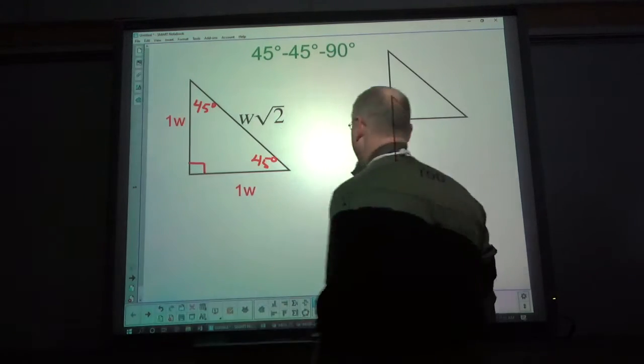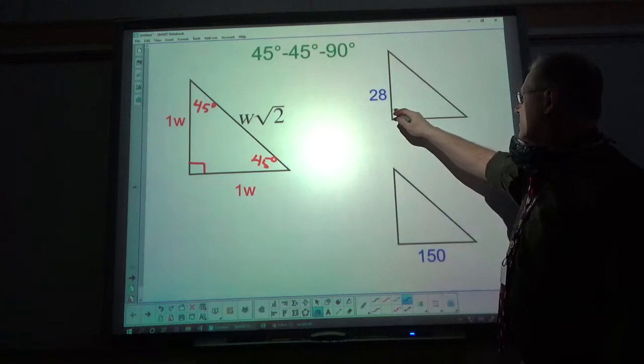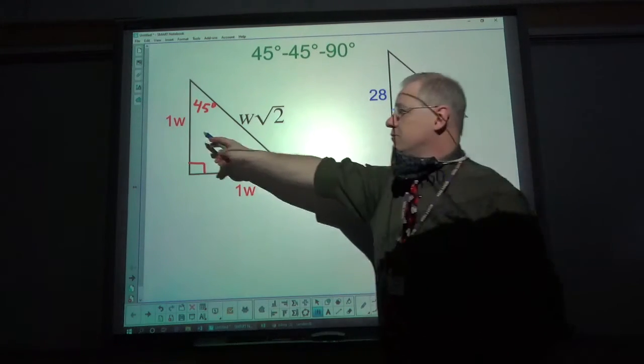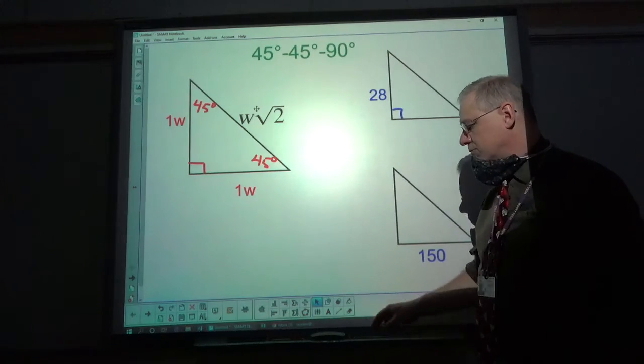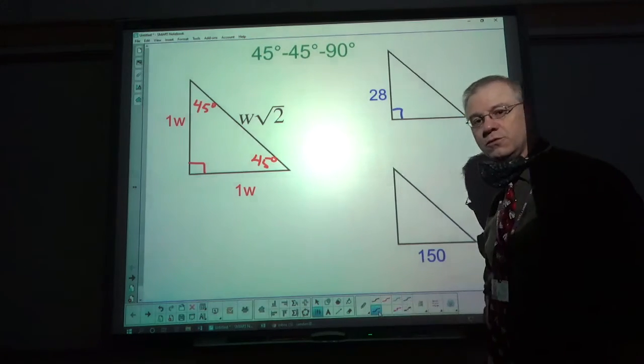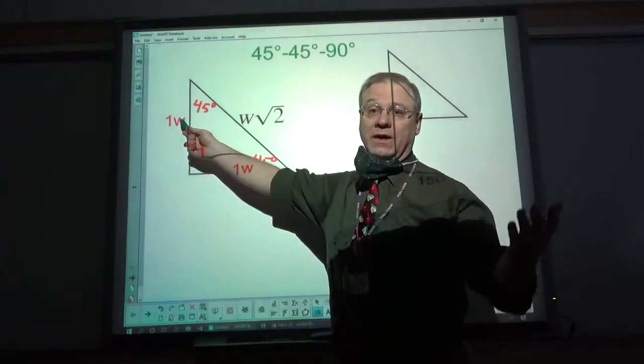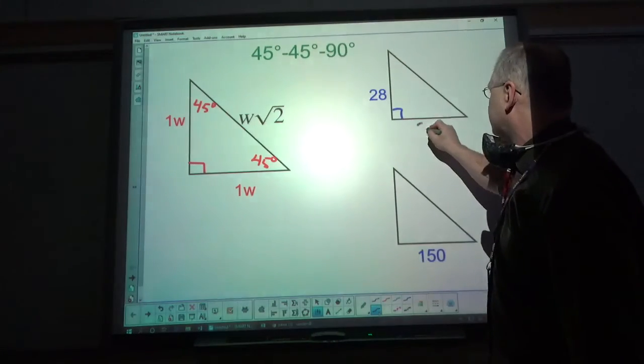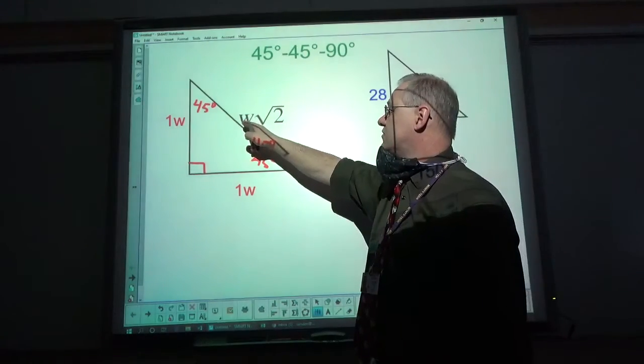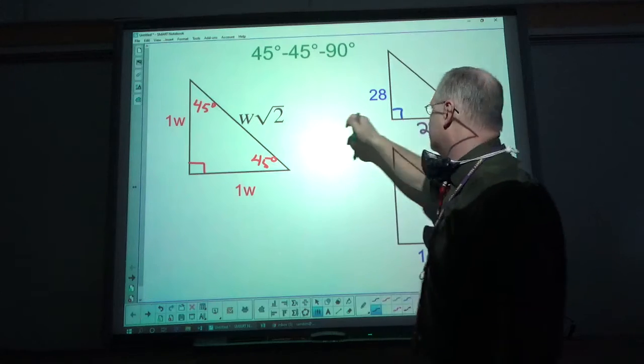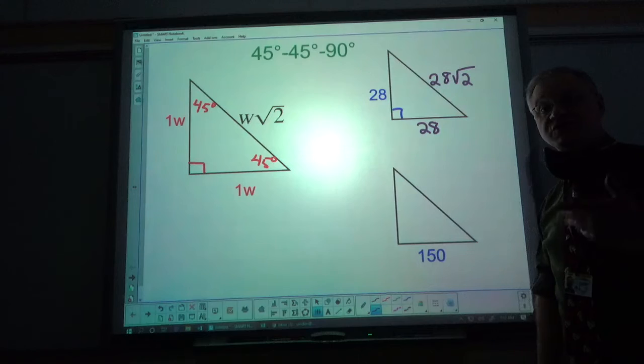All right, so if I were to tell you that this side, which is the one w side, is 28, then wouldn't you assume that w is 28? And if 28 is w, one w is just w, then this side is also 28. And this side, fill in the w, 28 square root of two. So once you know what w is, you just fill it in.